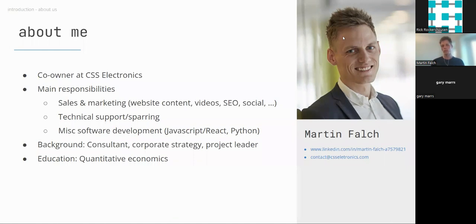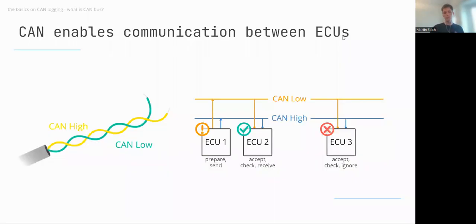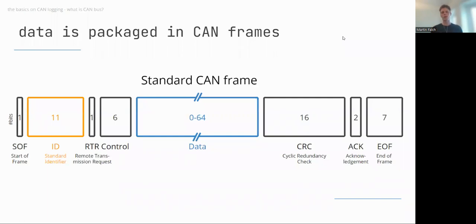To get started, I'll give a quick introduction to CAN bus for context. CAN bus is a technology that enables communication between CAN nodes or ECUs. In a vehicle, multiple small controllers communicate data with each other through the CAN bus network. In simplified terms, the network consists of CAN High and CAN Low wiring that allows data packets — called CAN frames — to be transferred between ECUs.